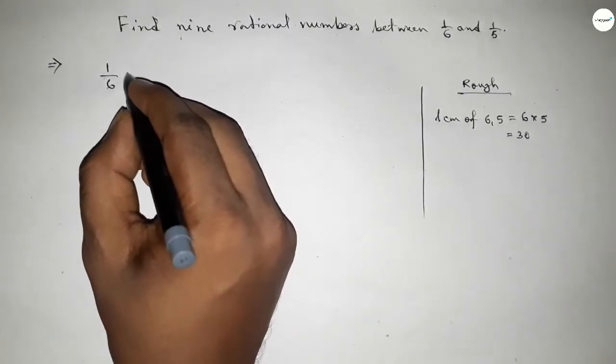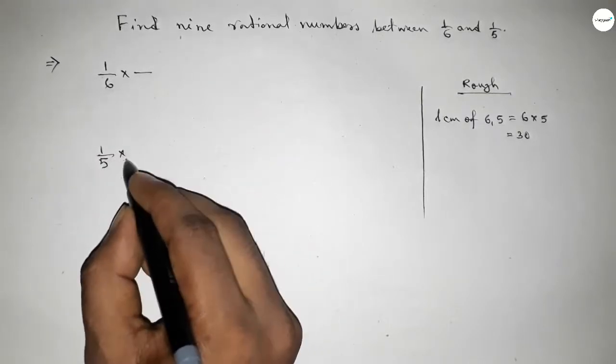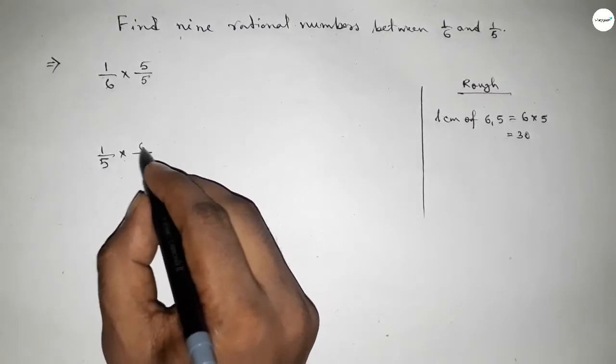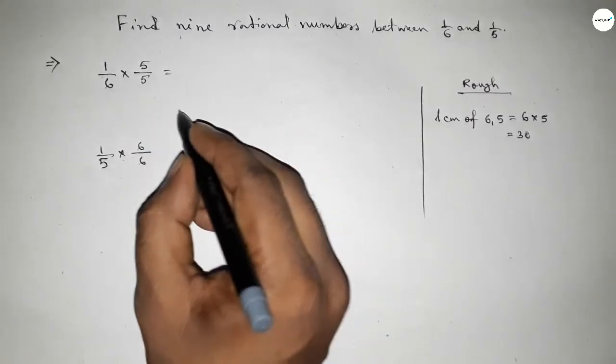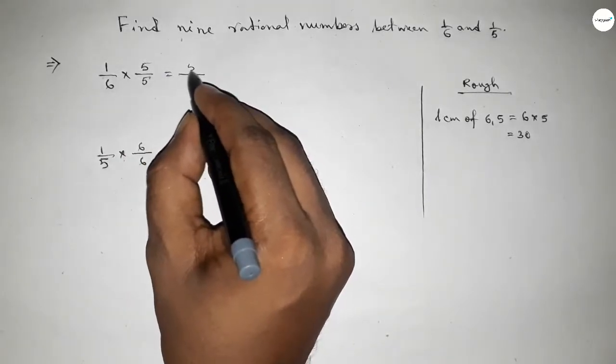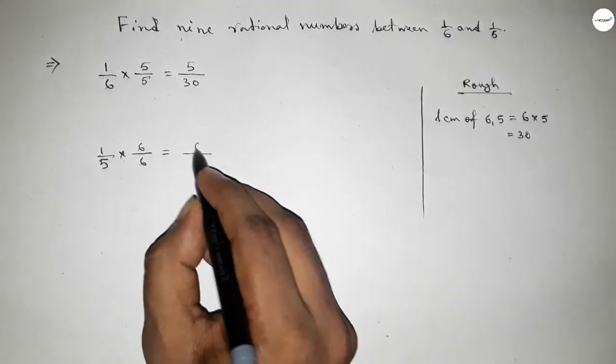Now what should be multiplying with here and here to get 30 as the denominator? If here we put 5 and here 6, then we can get 30 as the denominator. So this is 5/30 and this is 6/30.